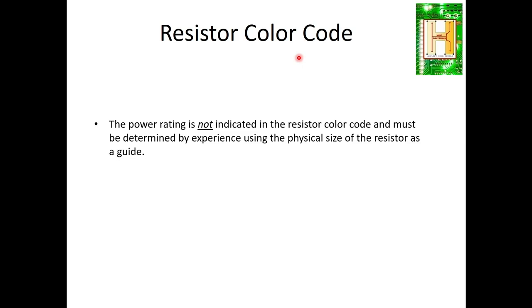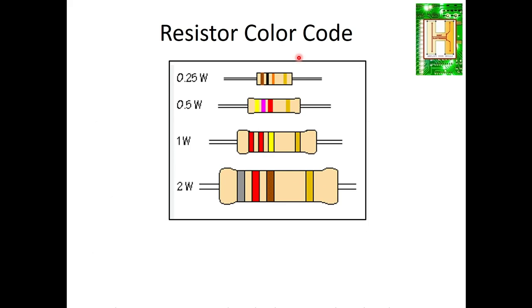There are different sizes of resistors which define different wattages. For example, the smaller resistor is 0.25 watt, known as a quarter watt. Then there is 0.5 watt, known as half watt, then one watt and two watt. As the resistor size increases, the wattage also increases — it is totally dependent on the physical size of the resistor.